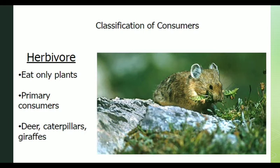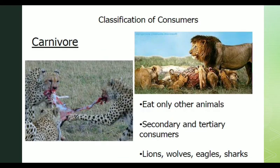Consumers are categorized as herbivores, carnivores, and omnivores. Herbivores are primary consumers — they eat plants. Examples include deer, caterpillar, and giraffe. Carnivores eat only other animals.